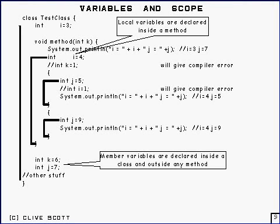Now we're going to have to say a bit more about variables. There are two types of variable: member variables and local variables.